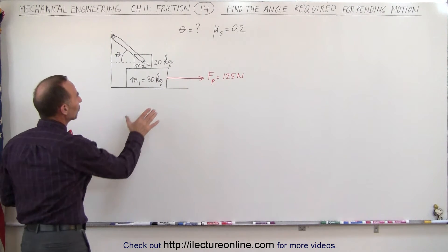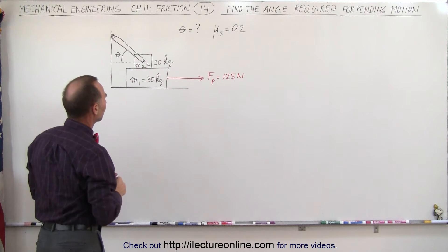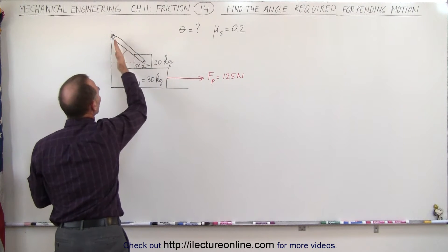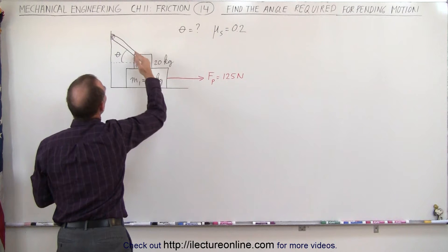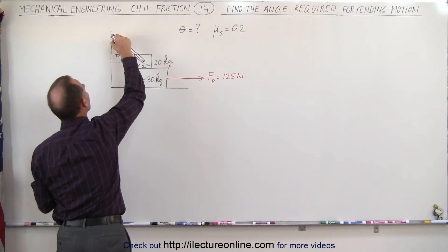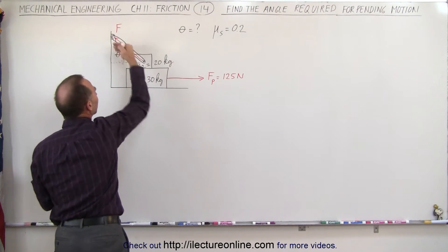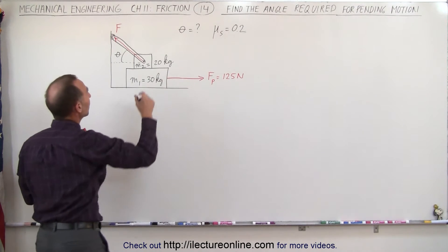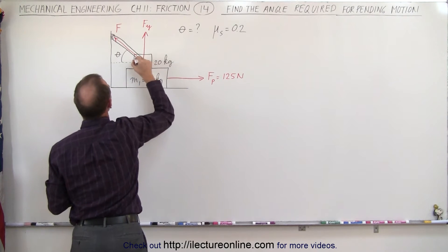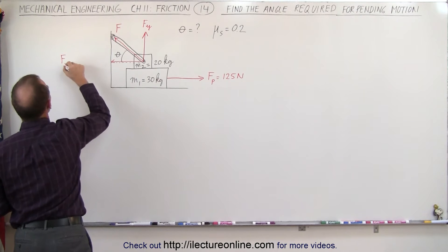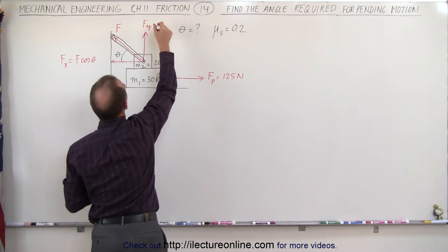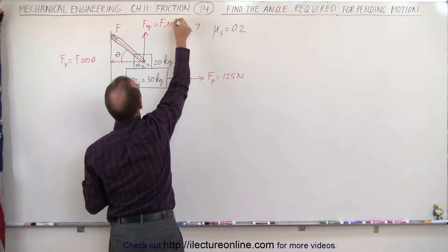We need to look at all the forces acting on this system. First, this bracket — which can pivot in different directions — will be at a particular angle, and the force will be directed along the length of this bracket, pulling back on M2. That means there's going to be a vertical component, f sub y, and a horizontal component, f sub x. F sub x equals F times cosine of theta, and f sub y equals F times sine of theta.